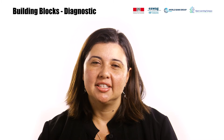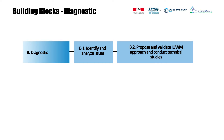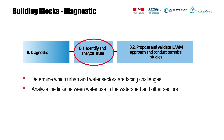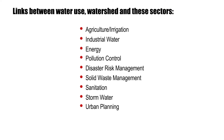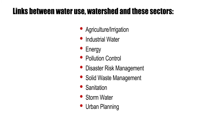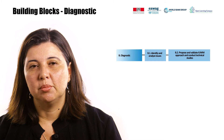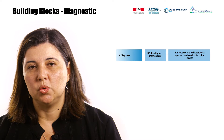Based on the data gathered and the stakeholder consultation carried out during the previous phase, the main objectives of the diagnostic phase are to determine which challenges urban and water sectors are facing or will face, analyze the links between water use in the watershed and other sectors, consider existing integrated practices or lack thereof, and assess the resilience of the urban water sector to future demographic change, water resource constraints, and climate change impacts. It is important to look not only at the data, but also at the modus operandi of the involved institutions.